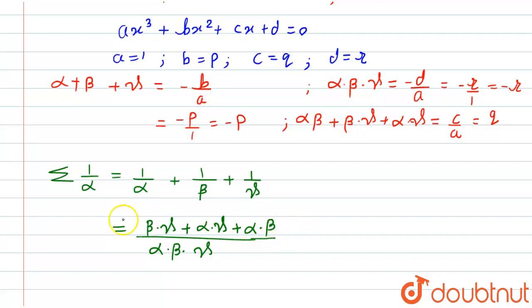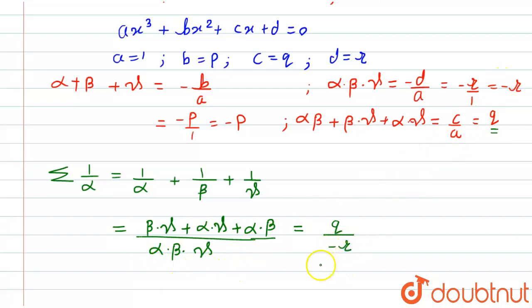Now, the term beta·gamma + alpha·gamma + alpha·beta equals q, and alpha·beta·gamma equals minus r. So the summation of 1 upon alpha simplifies to q divided by minus r, which is our required answer.